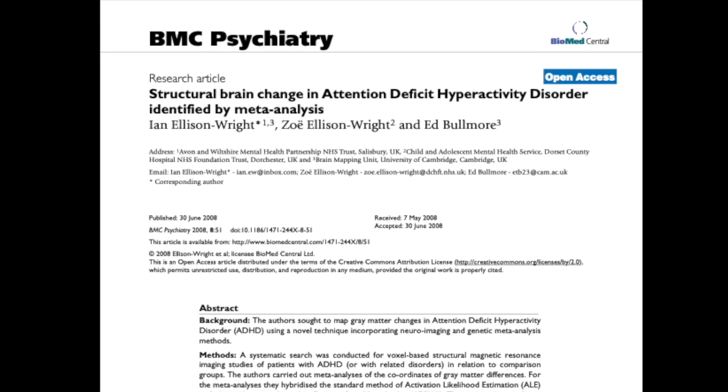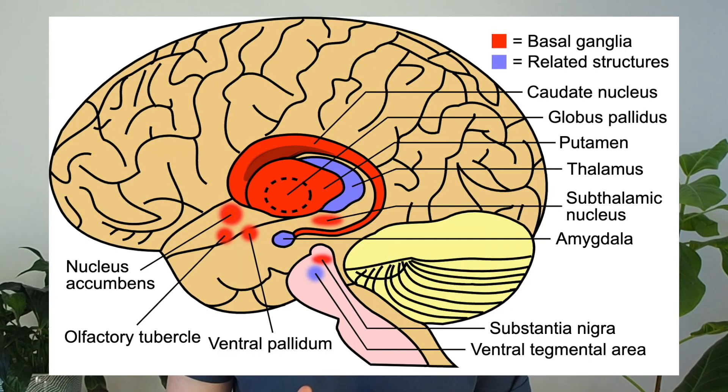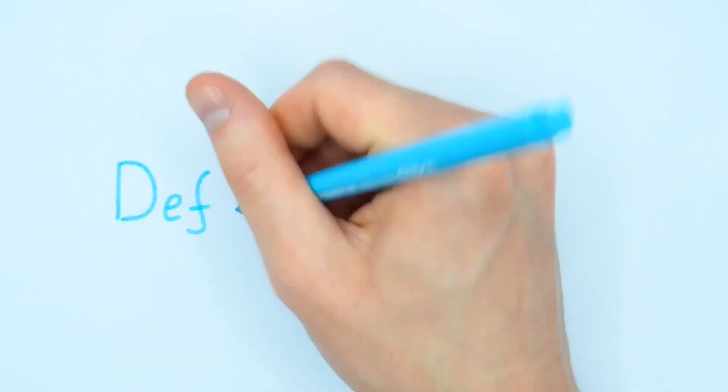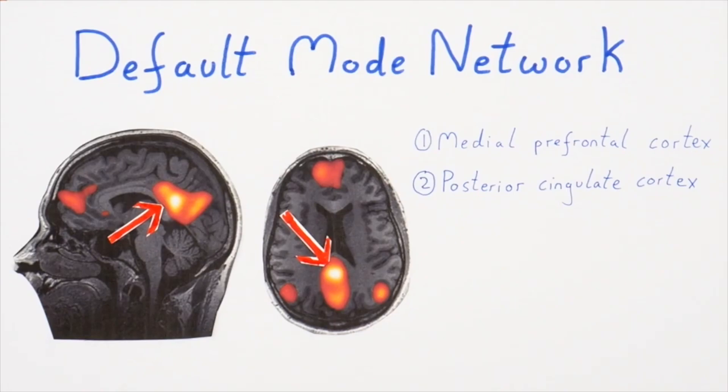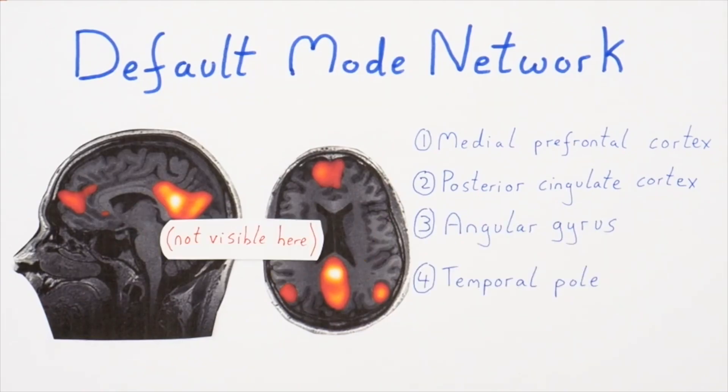Neuroimaging studies indicate that individuals with ADHD often have reduced volumes in the basal ganglia, a group of brain regions crucial for goal-directed behaviours. This correlation suggests, but doesn't confirm, that these structural changes could be linked to ADHD. Other neuroimaging studies look at something called the default mode network — a group of brain regions that fire together whilst you're awake but resting. For the nerds: this is the medial prefrontal cortex, posterior cingulate cortex, angular gyrus and temporal pole.